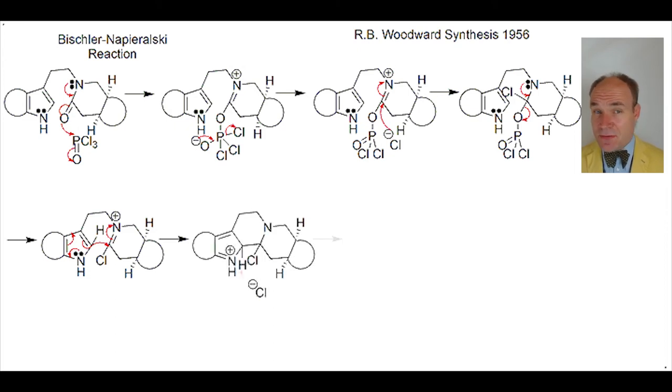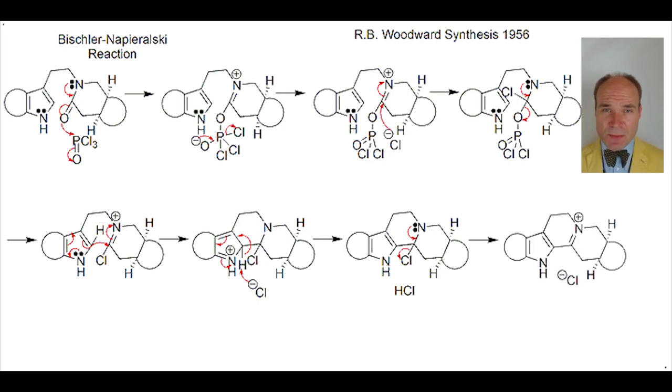A chloride ion, through deprotonation, restores the pyrrolyl's aromaticity. The lone pair on the nitrogen creates a pi bond with the reformation of the iminium ion, and the loss of a chloride leaving group.